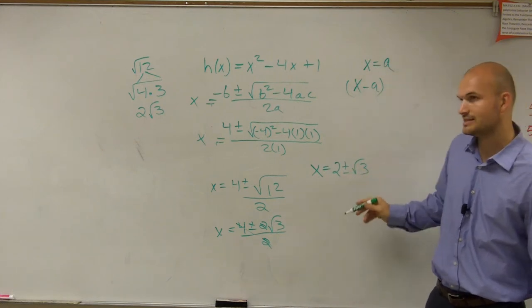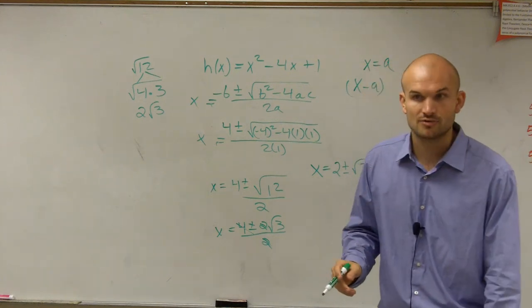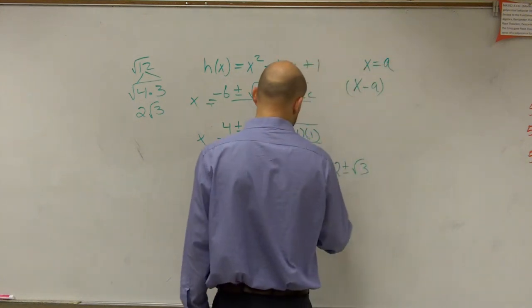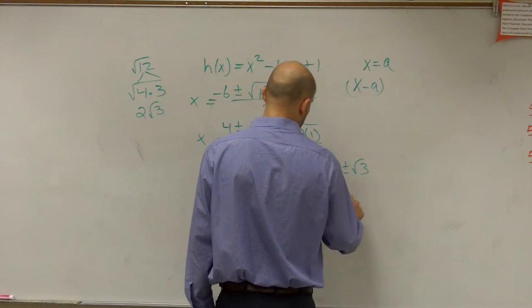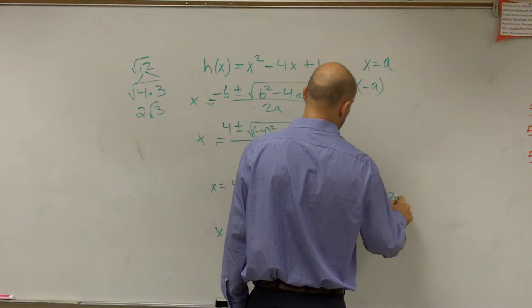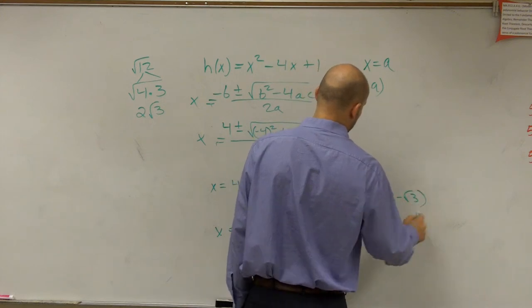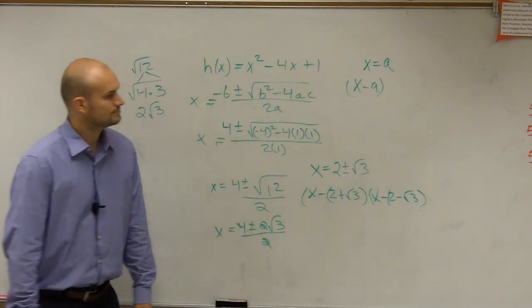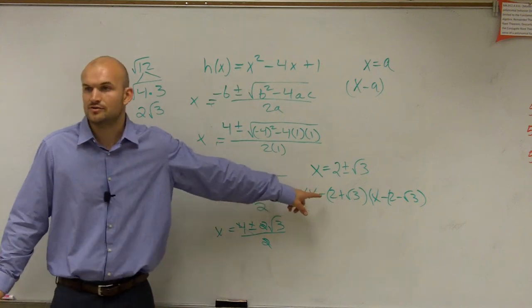So to write these as your factors, because that's what it says to do, write it as linear factors, it's going to be x minus 2 plus square root of 3 times x minus 2 minus square root of 3. So that's going to be your factored form.